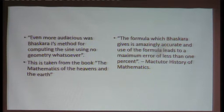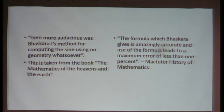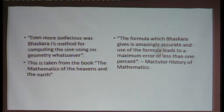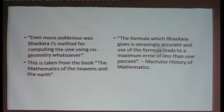Even more audacious was Bhaskara I's method — Bhaskara I, because there were many Bhaskara's — for computing the sine using no geometry whatsoever. Just some coefficients of the polynomials are given and you can compute it. This quote is taken from the book 'The Mathematics of the Heavens and the Earth.' There is also a popular website, MacTutor History of Mathematics, where it is written: 'The formula which Bhaskara gives is amazingly accurate, and use of the formula leads to a maximum error of less than 1%.'